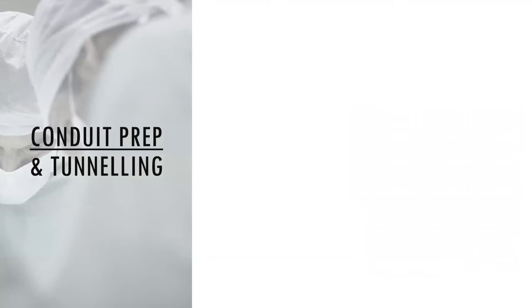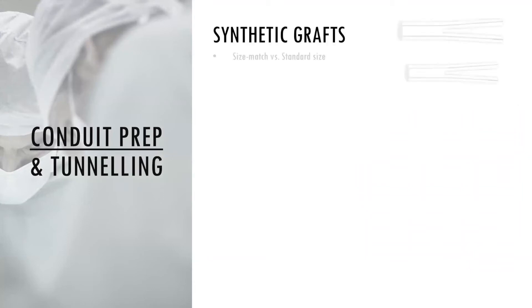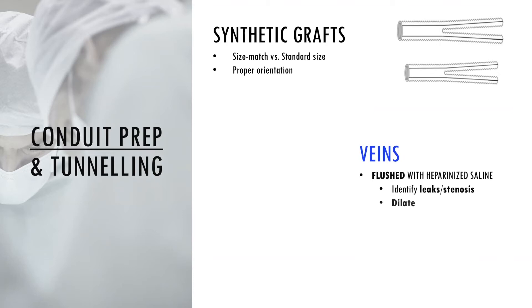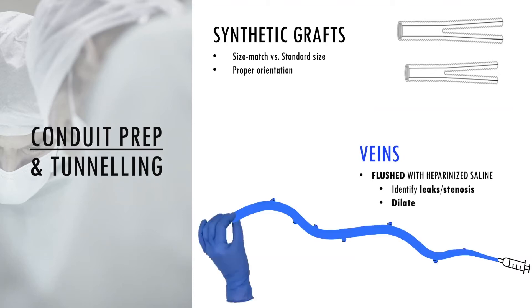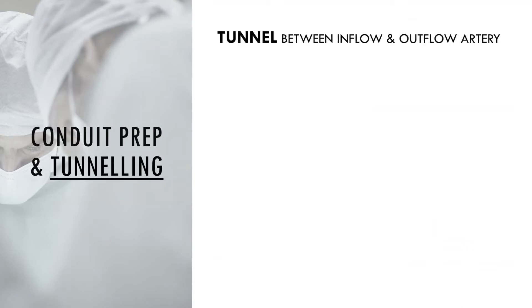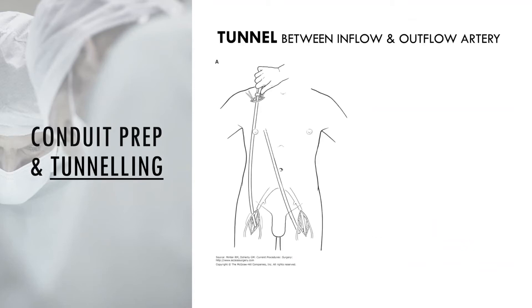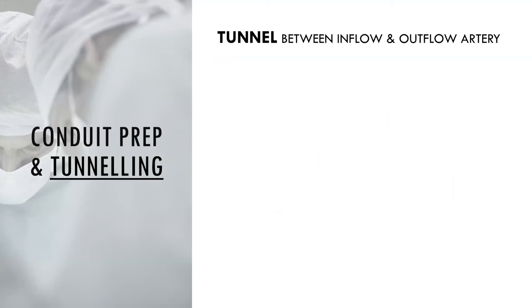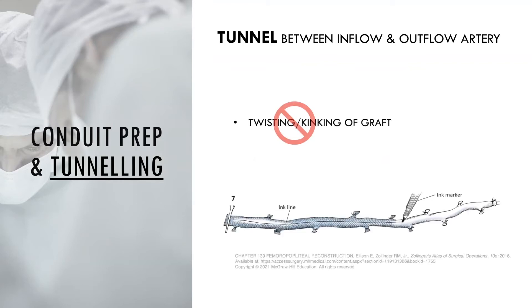For conduit preparation, if a synthetic graft is used the surgeon may size-match it or choose a standard size. A vein graft is prepared by gently flushing it against resistance to look for any areas of leakage or stenosis and to dilate it. One end is compressed manually or with a soft vascular clamp while it is flushed with heparinized saline. For tunneling, a tunnel between the inflow and outflow artery is created with specific instruments or with blunt dissection. The surgeon ensures the graft is not twisted or kinked when passing it through the tunnel, and a vein graft may be marked for orientation.